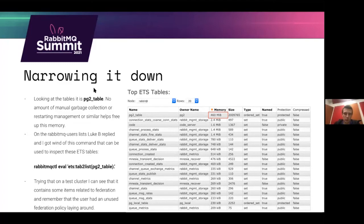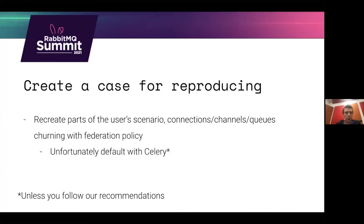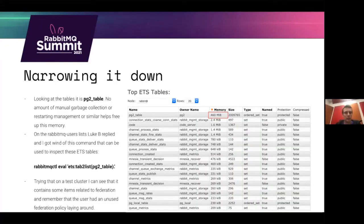You can look at this in RabbitMQ Diagnostics or RabbitMQ Top to see exactly which table it is. It was the PG2 table. We tried the usual suspects — garbage collection, restarting the management interface — and that didn't free up any of this memory. Luke Bakken replied on the RabbitMQ users list with a command to inspect these tables manually on a test server, and we could see hints that it was something related to federation.